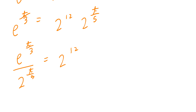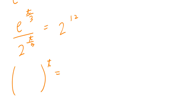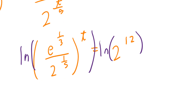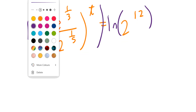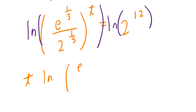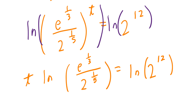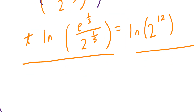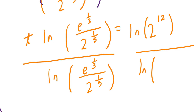To solve for the exponent, take ln of both sides. Express the left side as e to the power of 1 over 3 divided by 2 to the power of 1 over 5, all to the power of t. Taking ln of both sides and bringing the exponent to the front: t times ln of e to the power of 1 over 3 divided by 2 to the power of 1 over 5, equals ln of 2 to the power of 12. Divide both sides by the ln expression to isolate t.